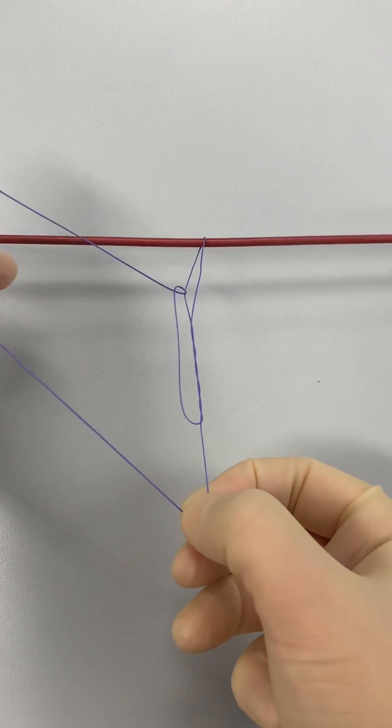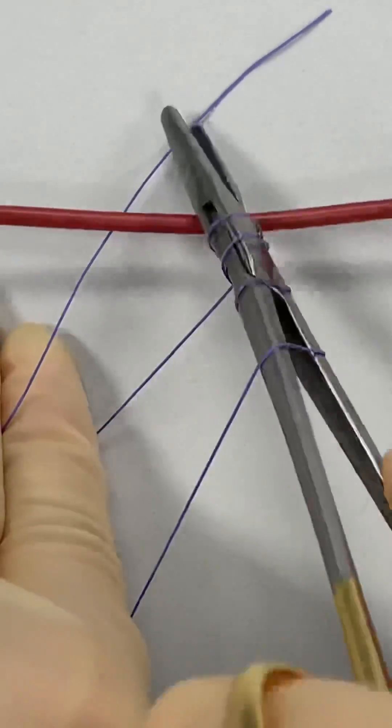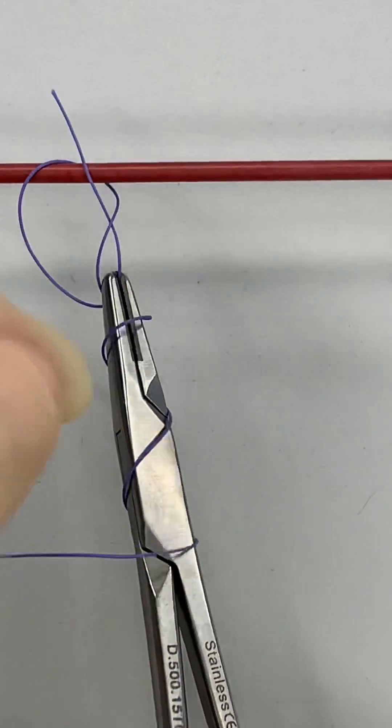But here's a more secure surgical sliding knot. It starts off with 4 throws of suture material over the needle holder. The short end of suture material is grabbed and pulled through all 4 loops.